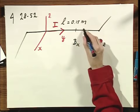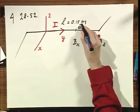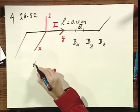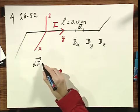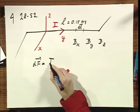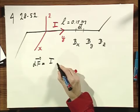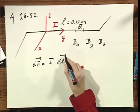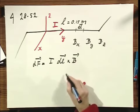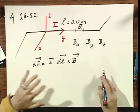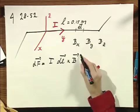Now the force on a very small element dl of the wire, that force would be dF which equals I times dl cross B. That's an immediate consequence of the v cross B force that we just discussed.